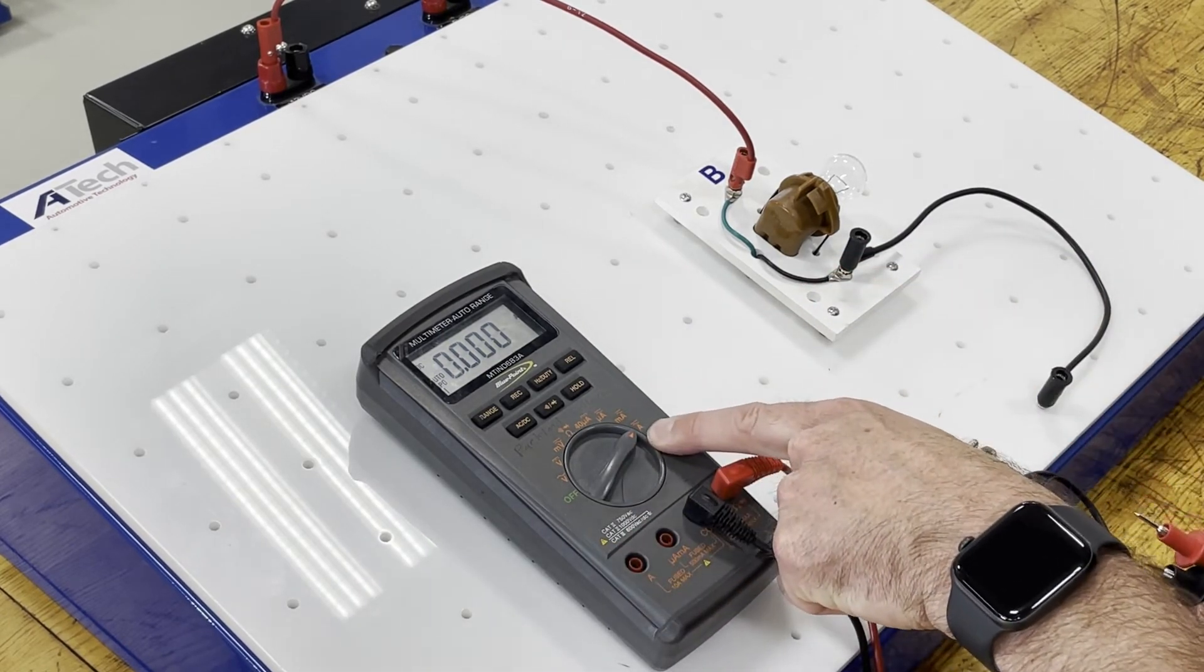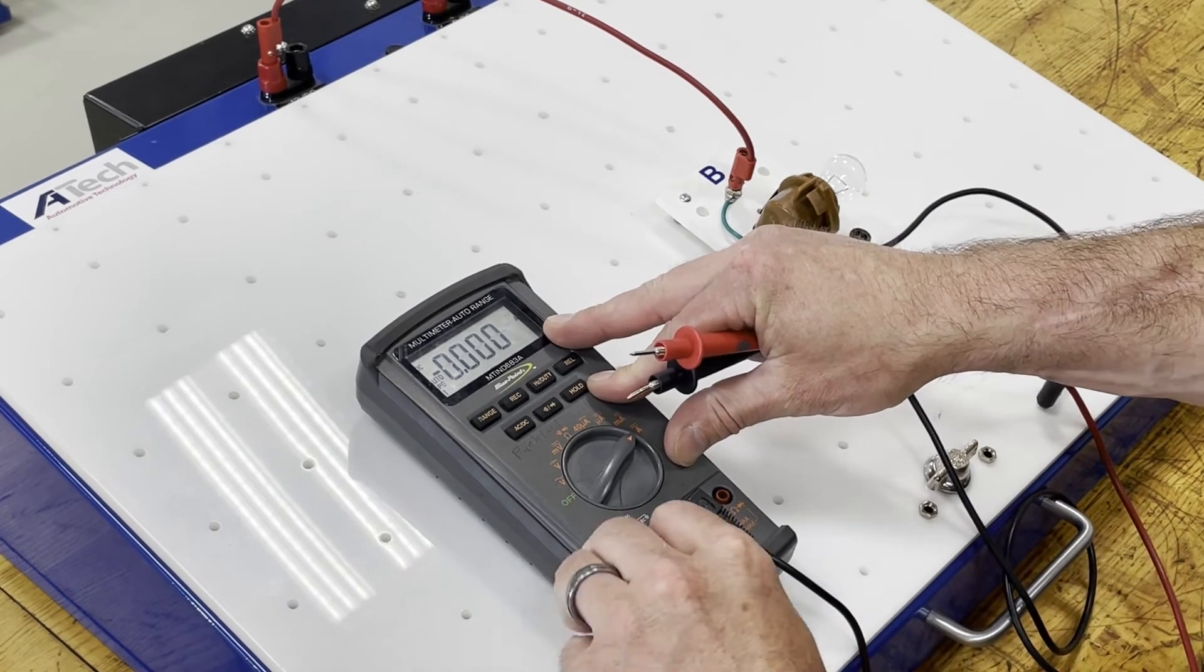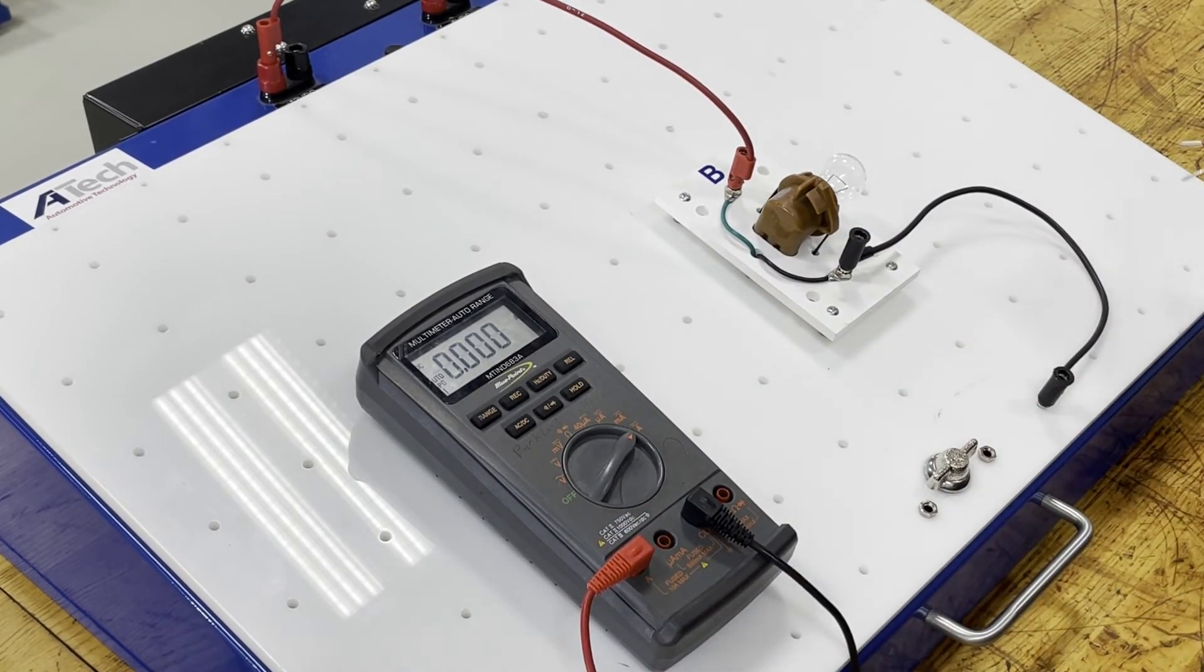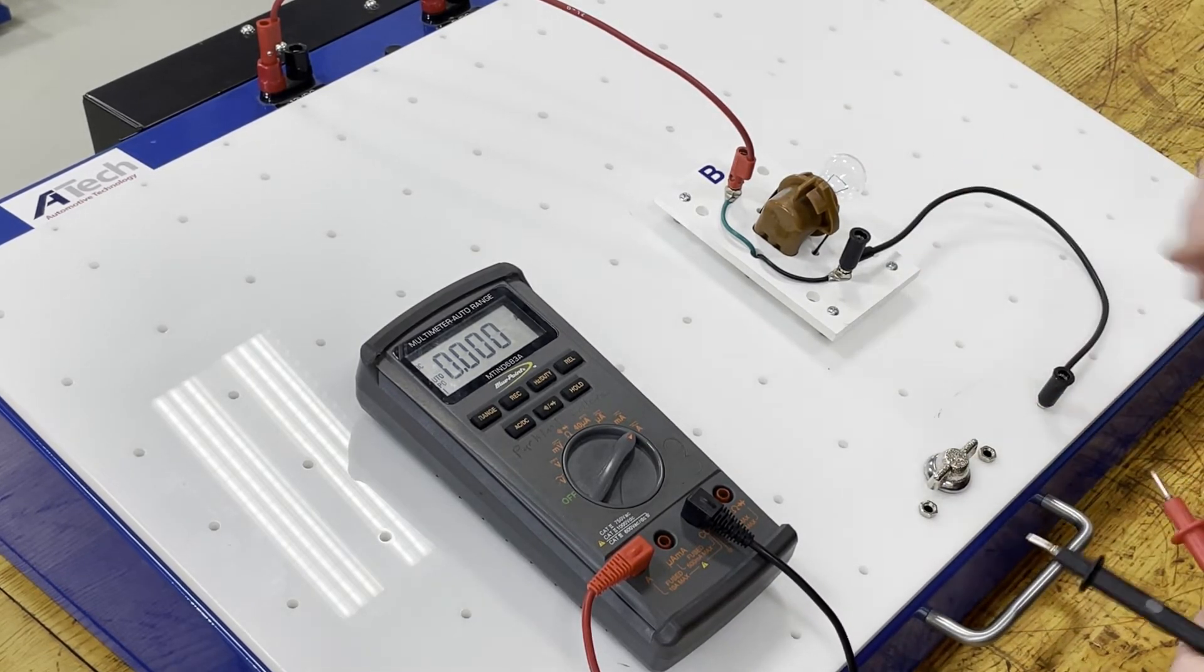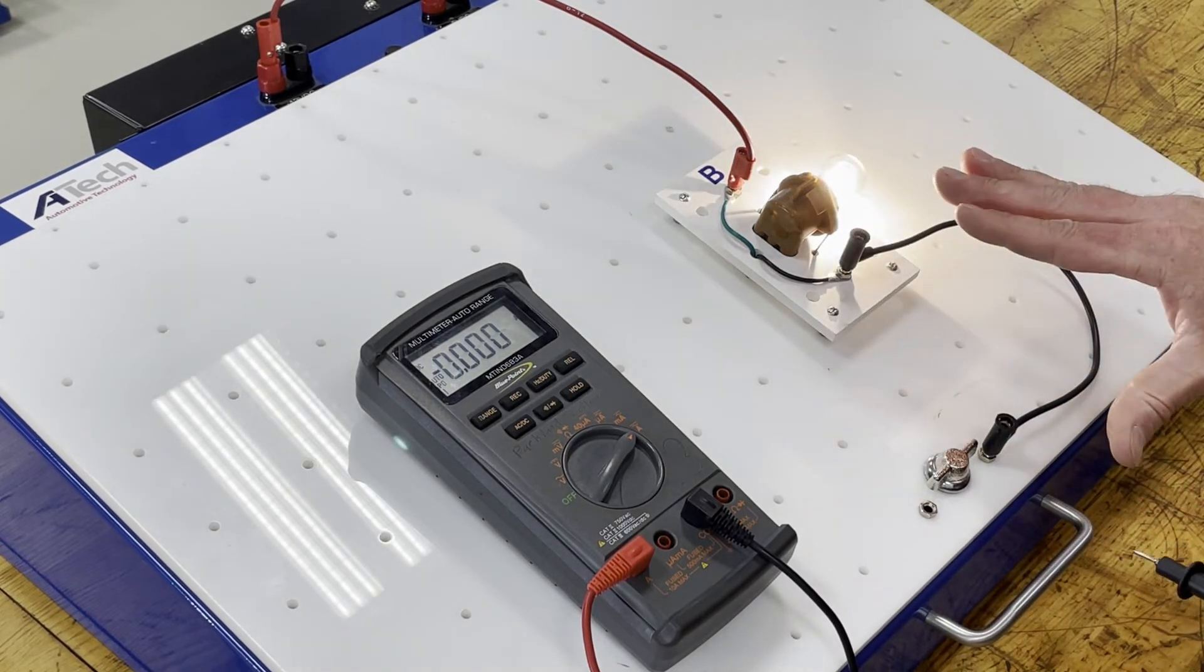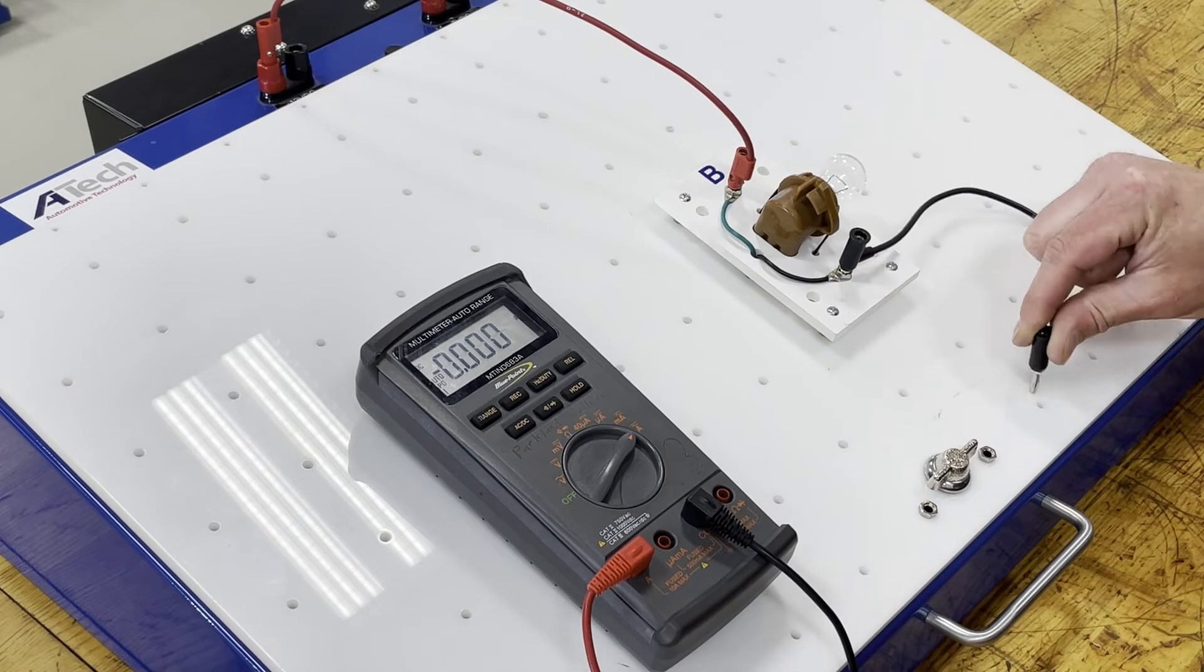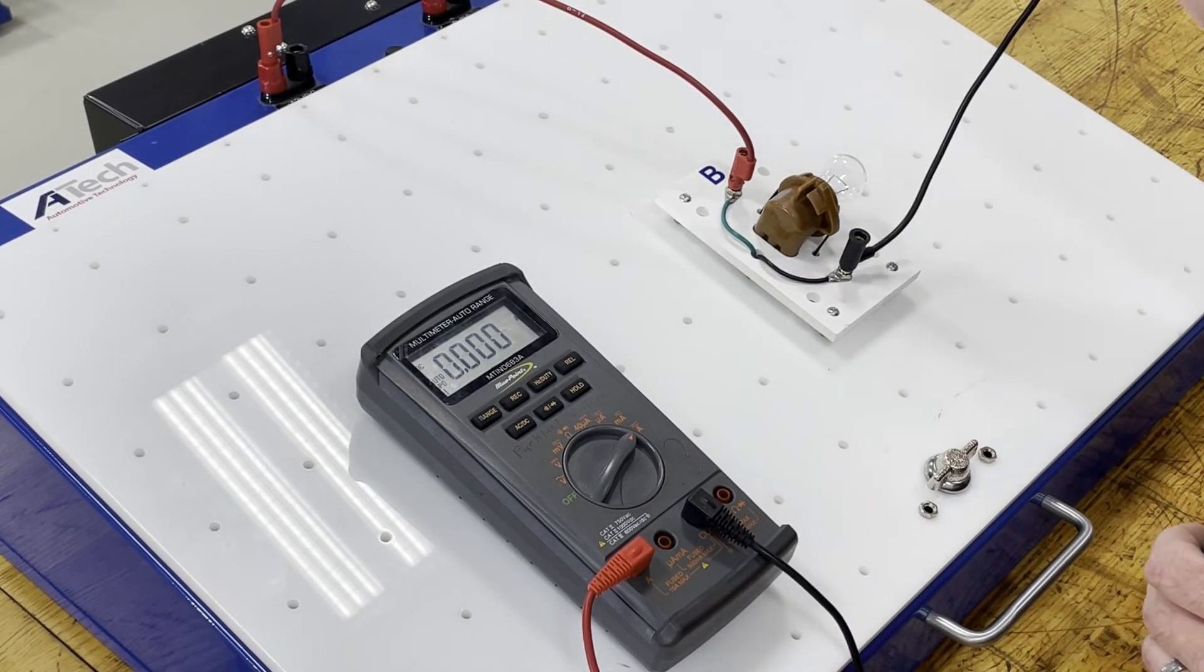I've got my dial located on amps. For this one I've got to move my lead and match to the A for amps down here and now to make this work I've got to put my meter, my leads in series with the circuit.